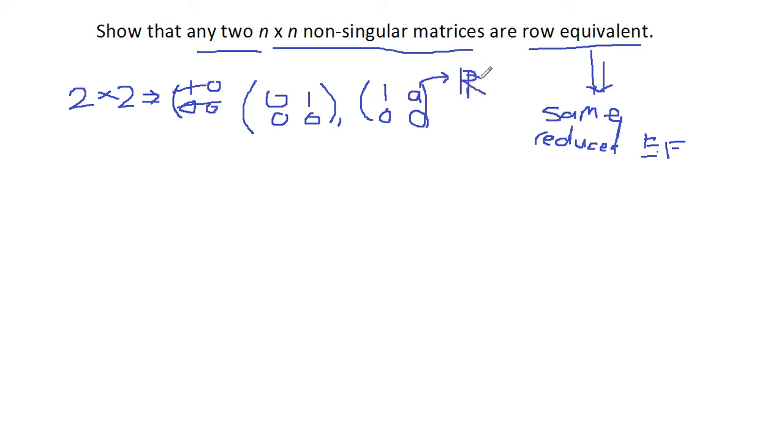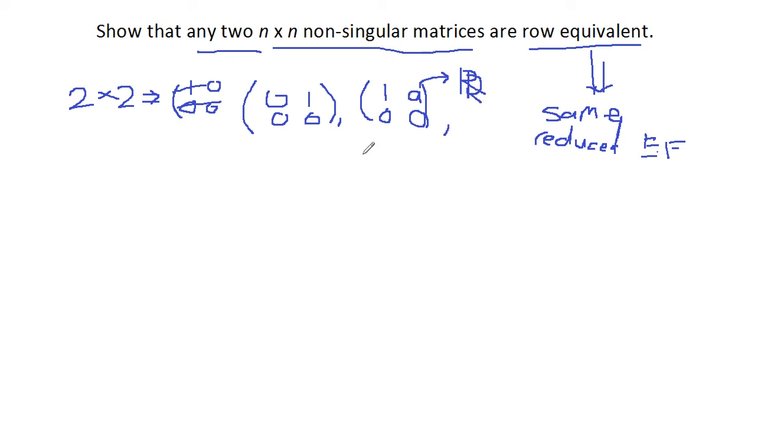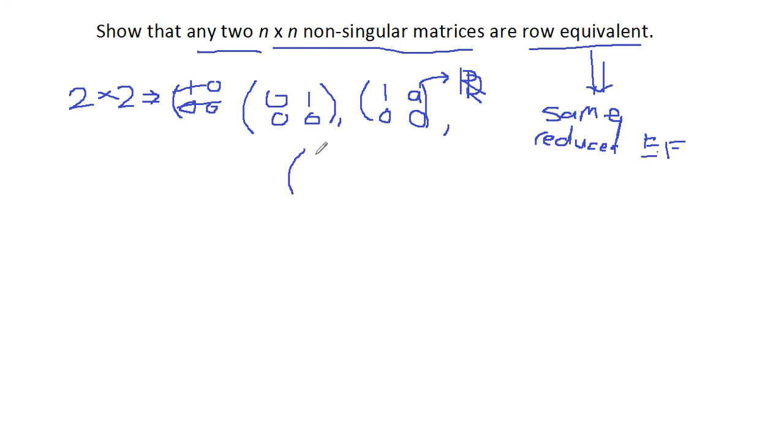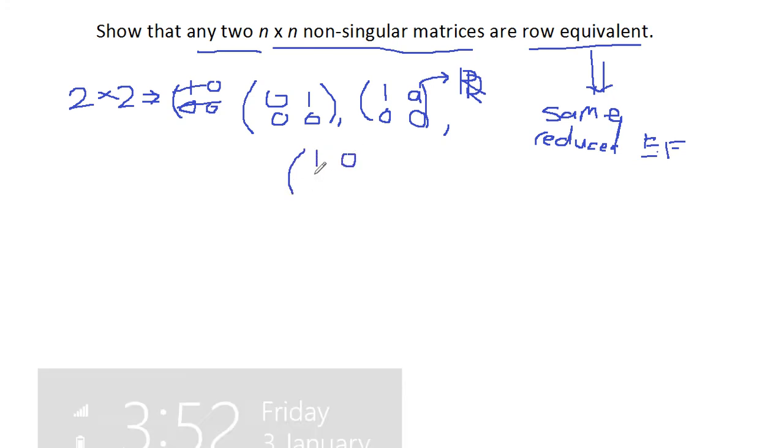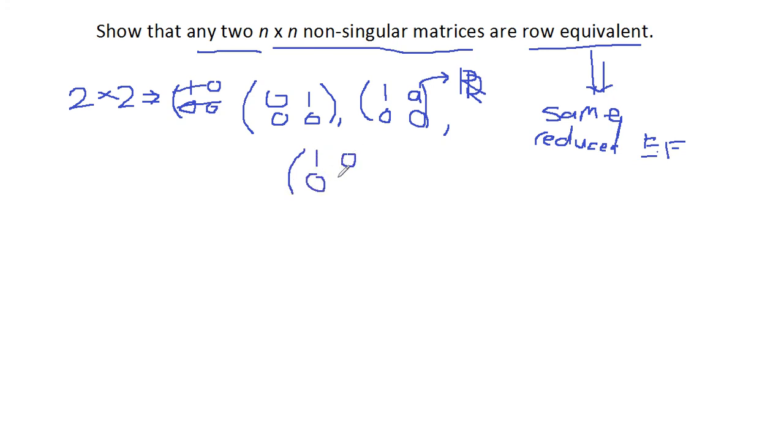Like zero, minus one, minus two, one, two, etc. Or I can also get this form: (1,0; 0,1). So these are my row equivalent classes or the types of reduced echelon forms.